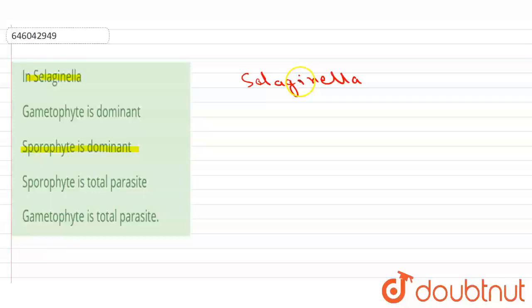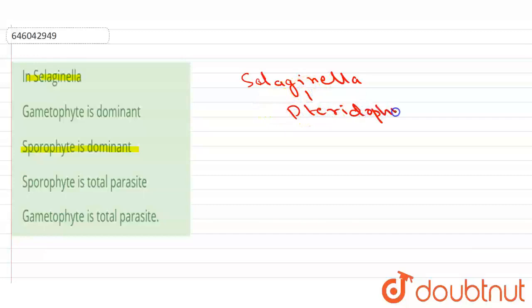Selaginella is a pteridophyte which is mainly seen in humid temperate and tropical rainforests, commonly known as spike moss.